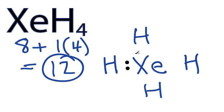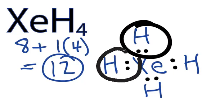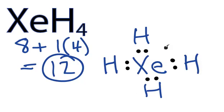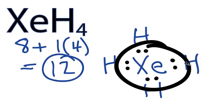Now we'll put 2 electrons between the atoms to form chemical bonds. We've used 8, and we have hydrogens with 2 each, so their outer shells are full. And xenon also has 8.